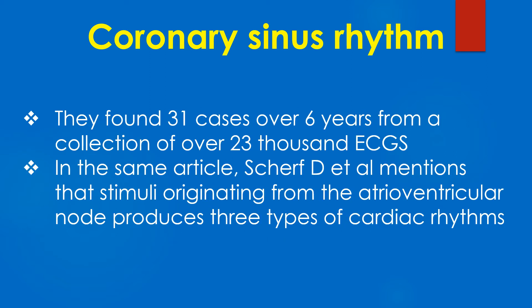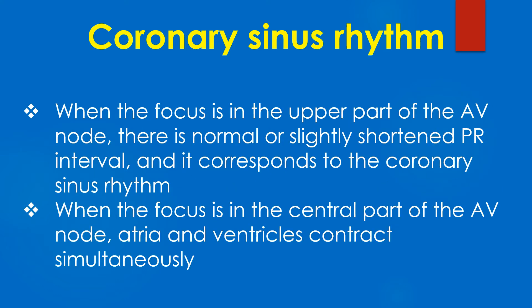They found 31 cases over 6 years from a collection of over 23,000 ECGs. In the same article, Sherf D and associates mentioned that stimuli originating from the atrioventricular node produce three types of cardiac rhythms. When the focus is in the upper part of the AV node, there is a normal or slightly shortened PR interval, and it corresponds to the coronary sinus rhythm.